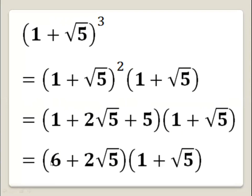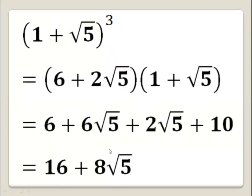Here 1 and 5 give us 6, and 2 square root of 5 remains, so we get (6 plus 2 square root of 5) multiplied by (1 plus square root of 5). Now let's expand: 6 times 1 equals 6, and 6 times square root of 5 equals 6 square root of 5. Then 2 square root of 5 times 1 is 2 square root of 5, and 2 square root of 5 times square root of 5 equals 2 times 5 which is 10. Collecting terms: 6 and 10 gives 16, and 6 square root of 5 and 2 square root of 5 gives 8 square root of 5.